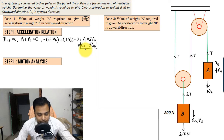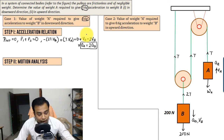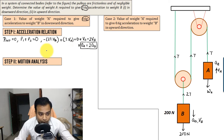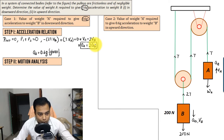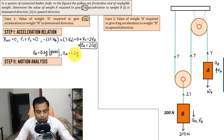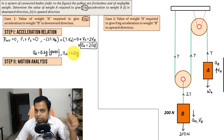We already know the acceleration of block B is 0.6g. Putting this value in, A_A = 2 × 0.6g = 1.2g, which is 1.2 × 9.81 m/s². That was all about the acceleration relationship between blocks A and B. Now let's carry out the motion analysis.